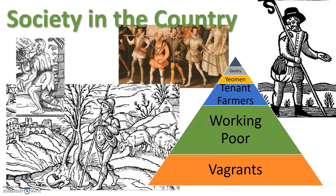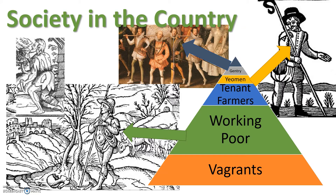Ordinary life in Elizabethan England was split between two very different worlds. Ninety percent of people lived in the country. These people ranged from the nobility and gentry to farmers such as yeomen and tenant farmers. The majority, however, were people who owned no land and had to labour — the working poor. There were also vagrants in the countryside: homeless beggars without land or jobs.